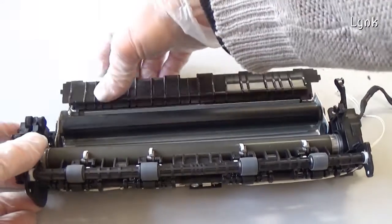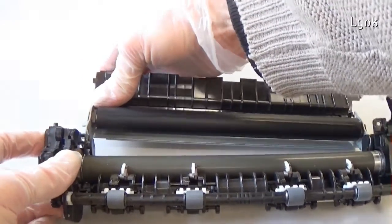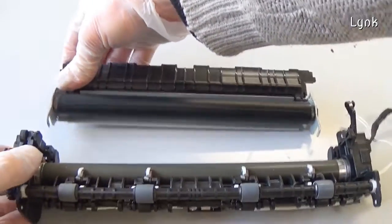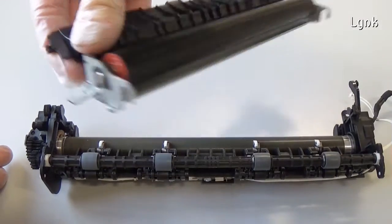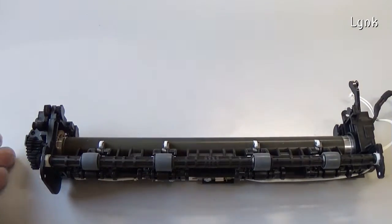Separate the two parts of the fuser unit, lower fuser roller and upper fuser roller. There are two metal hooks that keep the two parts of the unit together.